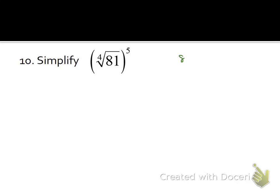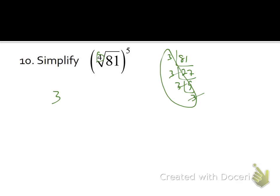Try again with the fourth root of 81, raised to the fifth power. Simplify: 3 goes into 81 giving 27, into 27 giving 9, into 9 giving 3 — four 3s. Need 4 to break one out, so a 3 comes out and nothing goes back in, so the radical disappears. We're left with 3 to the fifth power, which is 243.